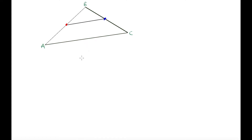The other side we're referring to is the side that is not included. In this case the mid-segment is connecting AB and BC, so AC is the side that is not involved. That means this mid-segment will be parallel to AC, and it will also be half the length of AC.